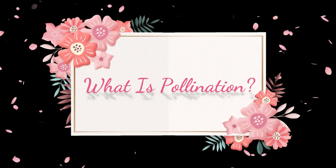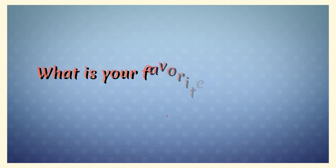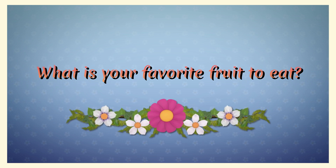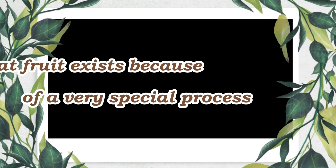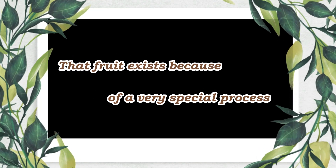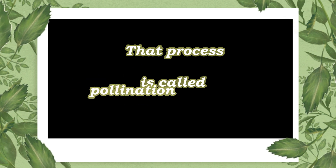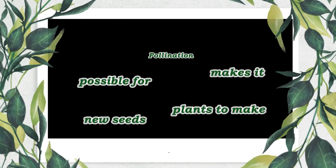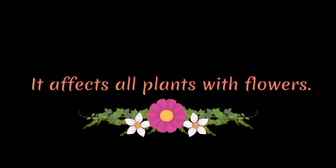What is pollination? What is your favorite fruit to eat? That fruit exists because of a very special process called pollination. Pollination makes it possible for plants to make new seeds, and it affects all plants with flowers.